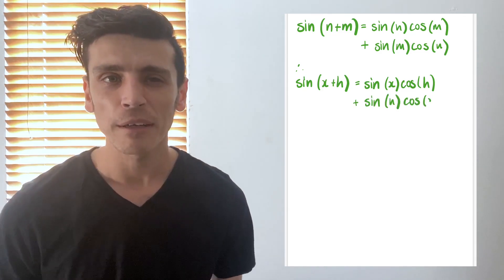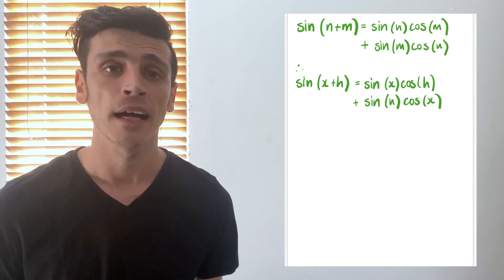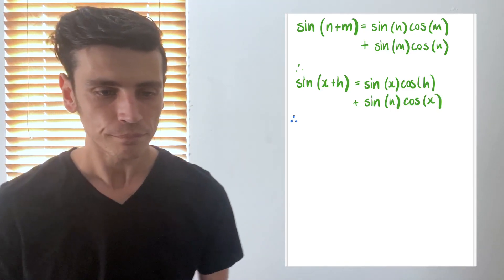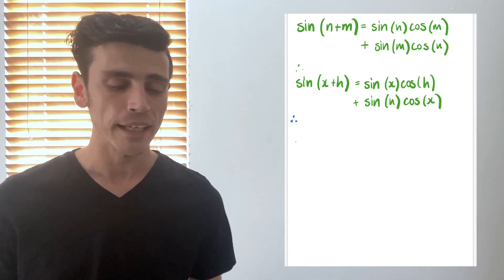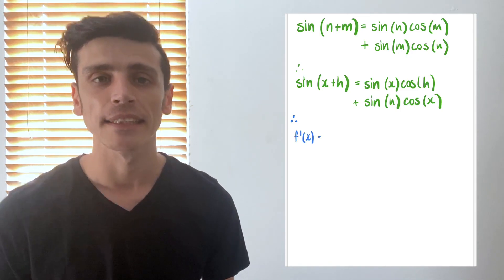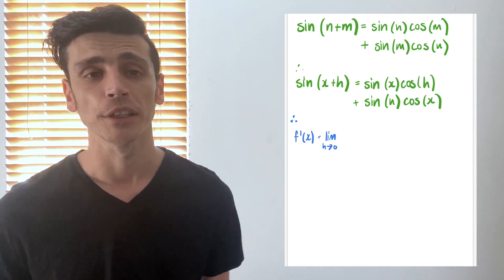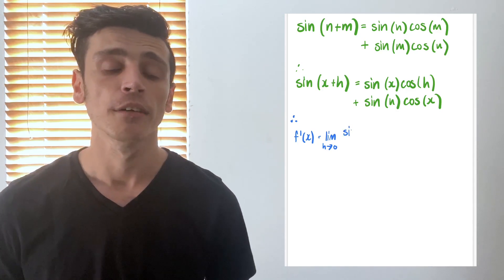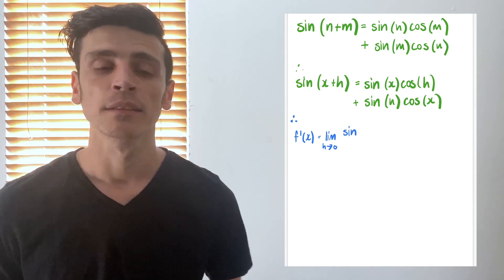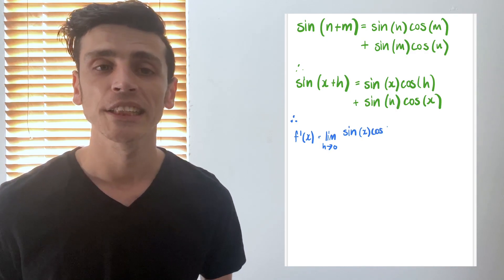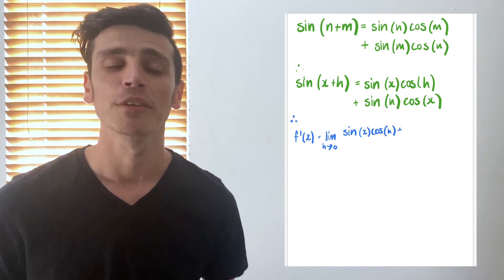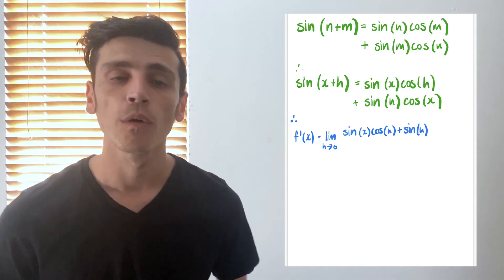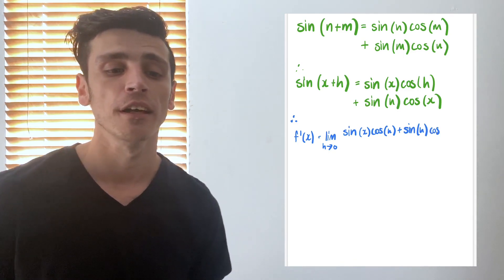Remember, in a previous video I talked about how the h part will be dealt with regarding the limit. So plugging this in, we get: the limit as h approaches 0 of the fraction: sine(x)·cos(h) plus sine(h)·cos(x) minus sine(x), all over h.